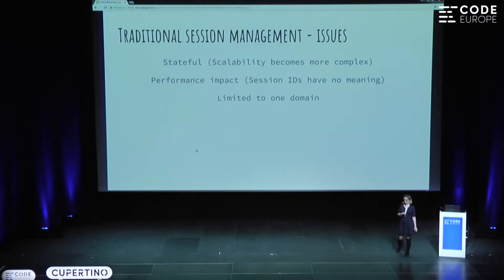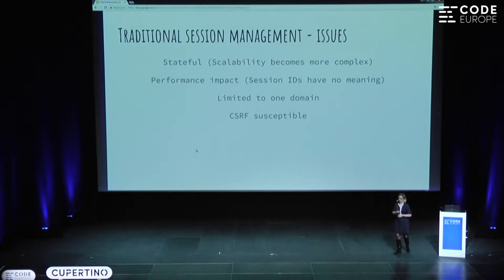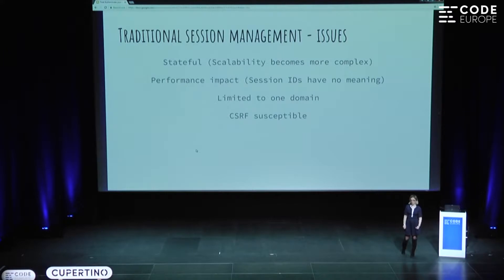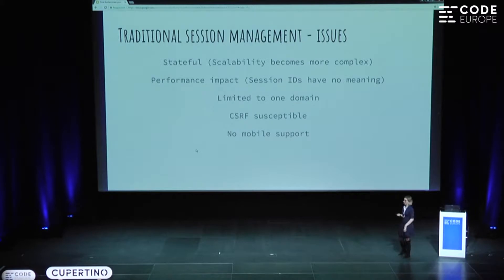Cookies are also limited to a single domain. Cookies are stored per domain — for example, app.com — and any request for app.com will grab the cookie assigned to that domain. But if you have another API, you won't be able to reuse that cookie. Cookies are also CSRF-susceptible — CSRF stands for cross-site request forgery — and you need to make sure your cookies cannot be stolen. Finally, you don't have great mobile support. Cookies are stored in the browser, so there's some support in mobile browsers, but it's not great, and if you're implementing native apps you're left without anything.